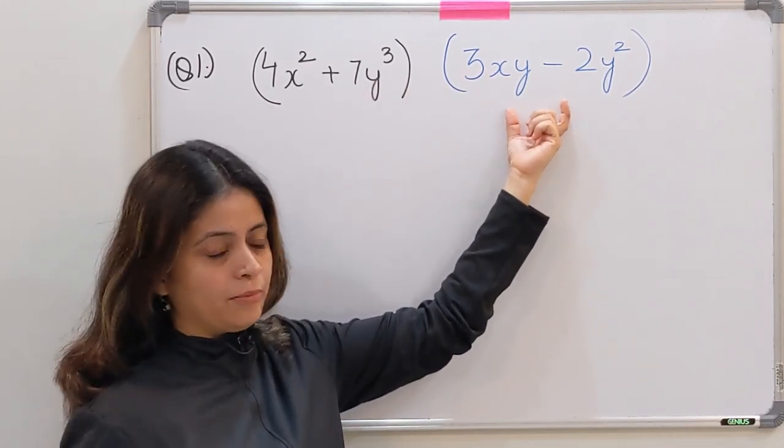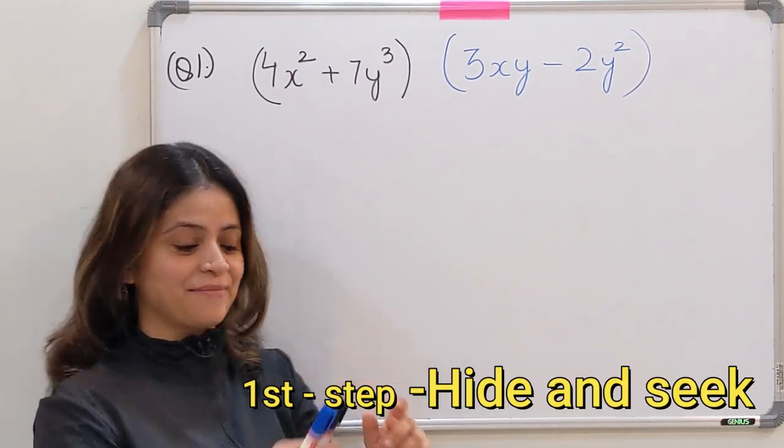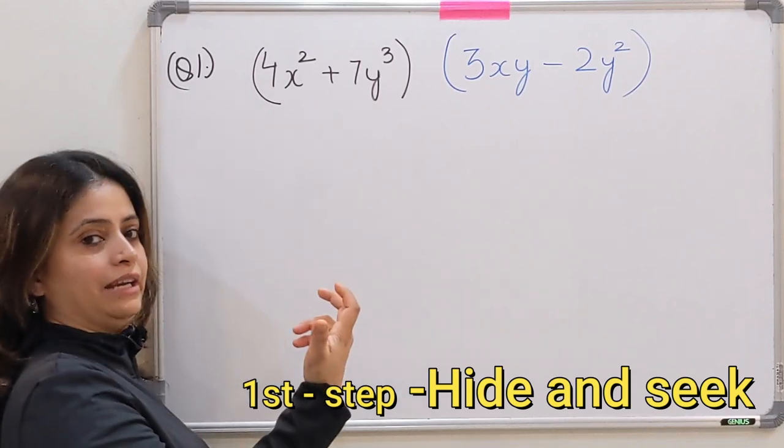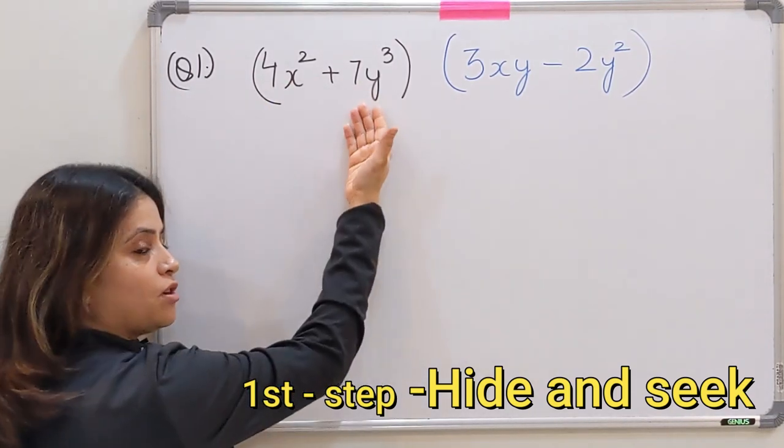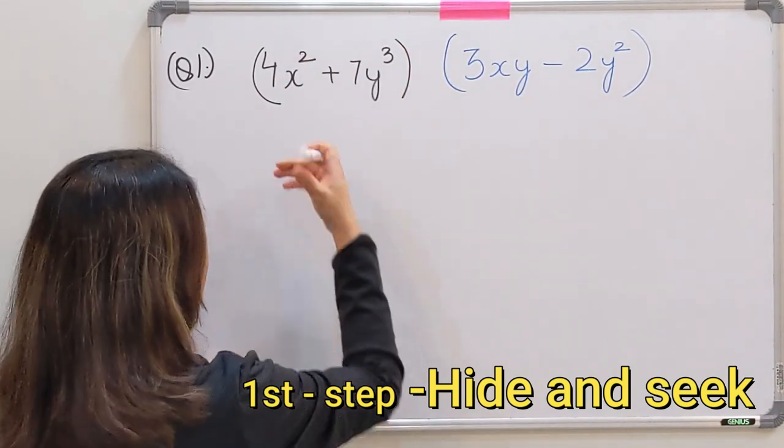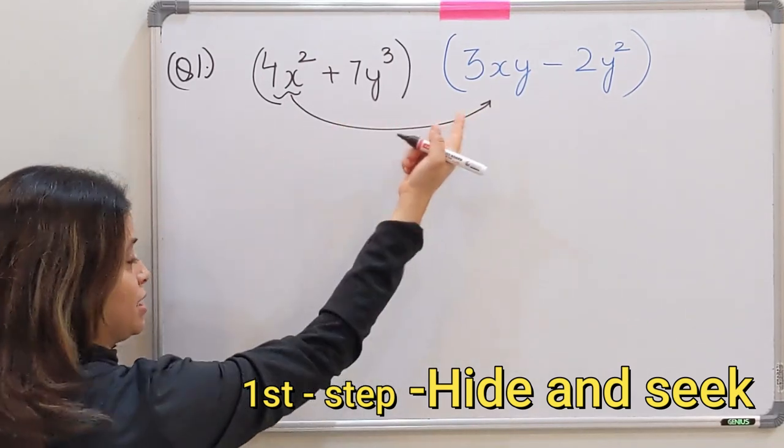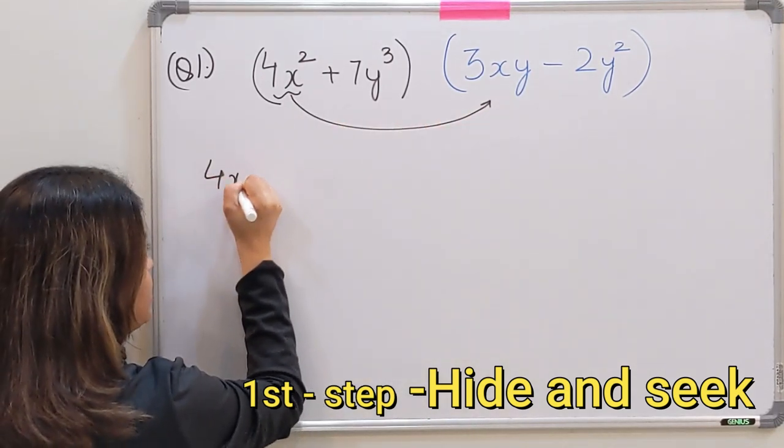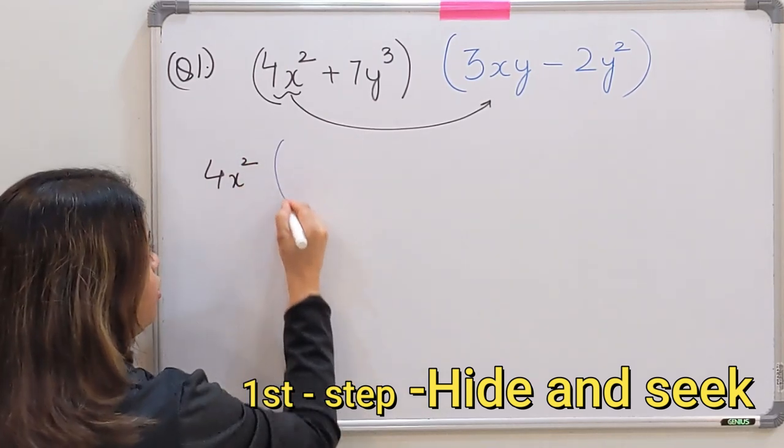Let's start with the first example. Here as you can see we have a binomial, both the terms are different. Here also is a binomial. Iska product nikalna hai. So step one: hide and seek method. Hum sabse pehle kis ko hide karenge? You can hide anyone first, but just because this second one is written, we will hide this one first.